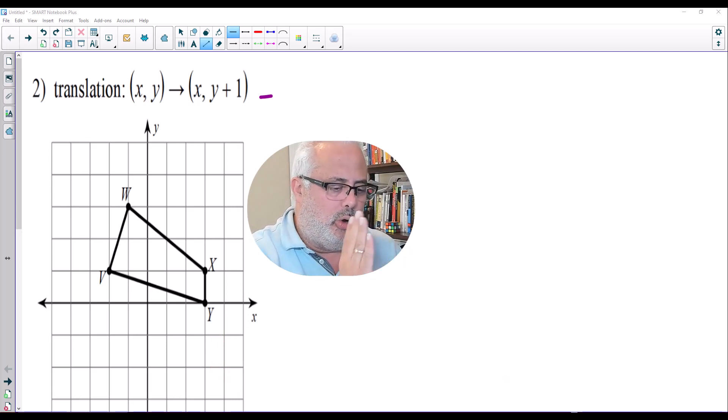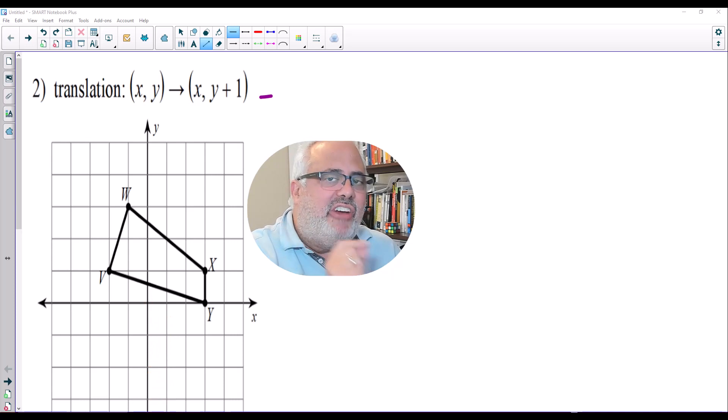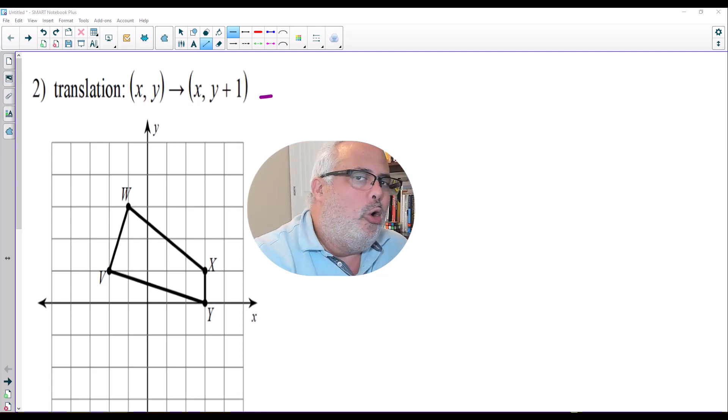We are going to make a rigid transformation. Why rigid transformation? Because we are not going to change the length of the sides. We are not going to change the measurement of the angles. We are only going to move that quadrilateral WXYV one unit up. Every x-coordinate of the vertices WXYV stays the same, and the y-coordinates are the ones that we are going to add one more unit because we are moving up.